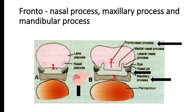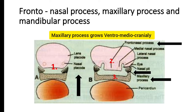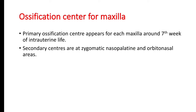The maxillary process grows ventromedially and cranially, then gives rise to the maxillary process ossification center. The ossification center of maxilla is very important: maxilla has two ossification centers. The primary ossification center appears for each maxilla separately — right and left — around the seventh week of intrauterine life. Secondary centers for ossification are at the zygomatic, nasopalatine, and orbitonasal areas.